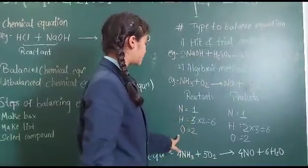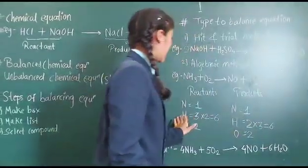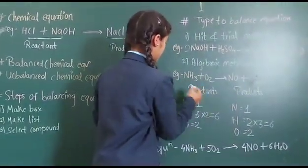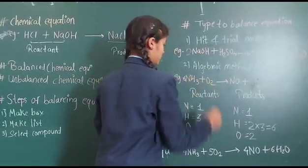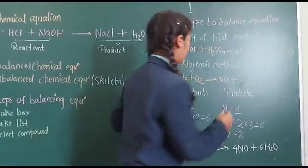Now hydrogen are 6, nitrogen is 1, oxygen is 2. Nitrogen is 1 on the product side. Hydrogen are 6. Means hydrogen are balanced. So I will write here 6. And on the product side of the hydrogen, I will write 6.